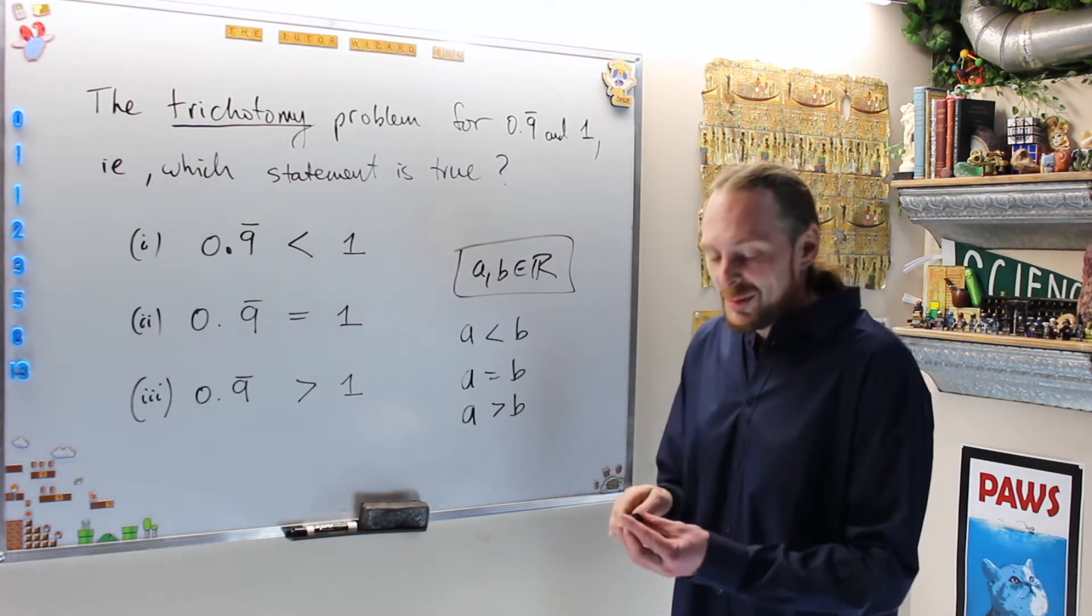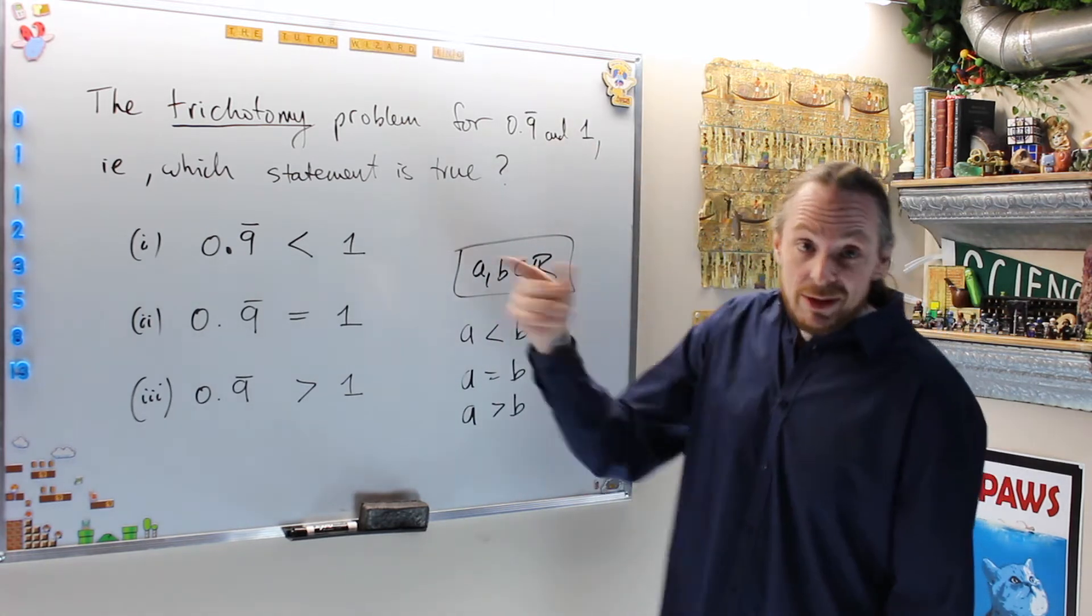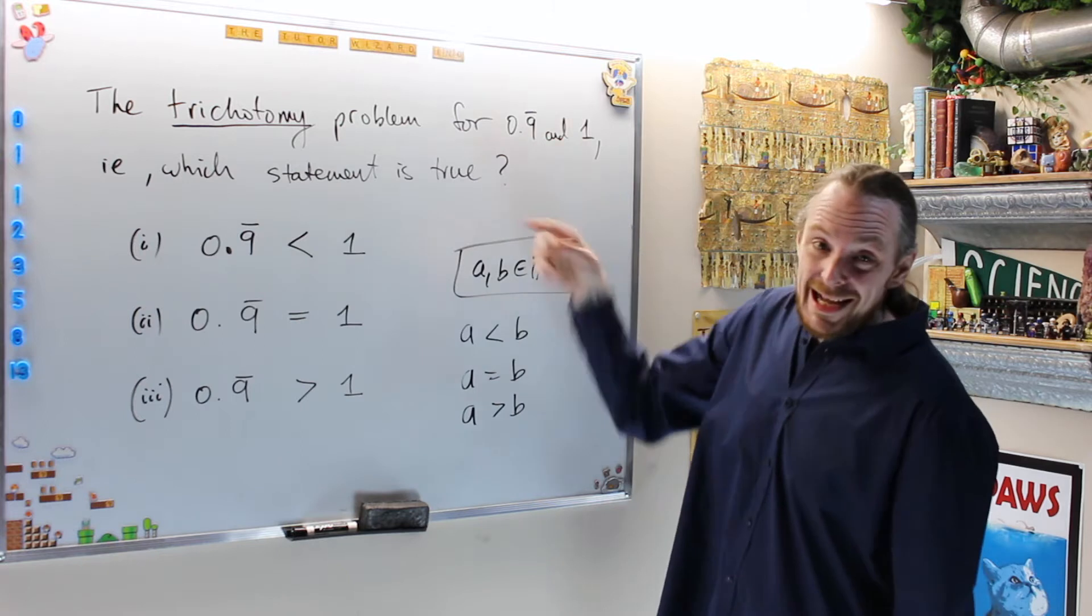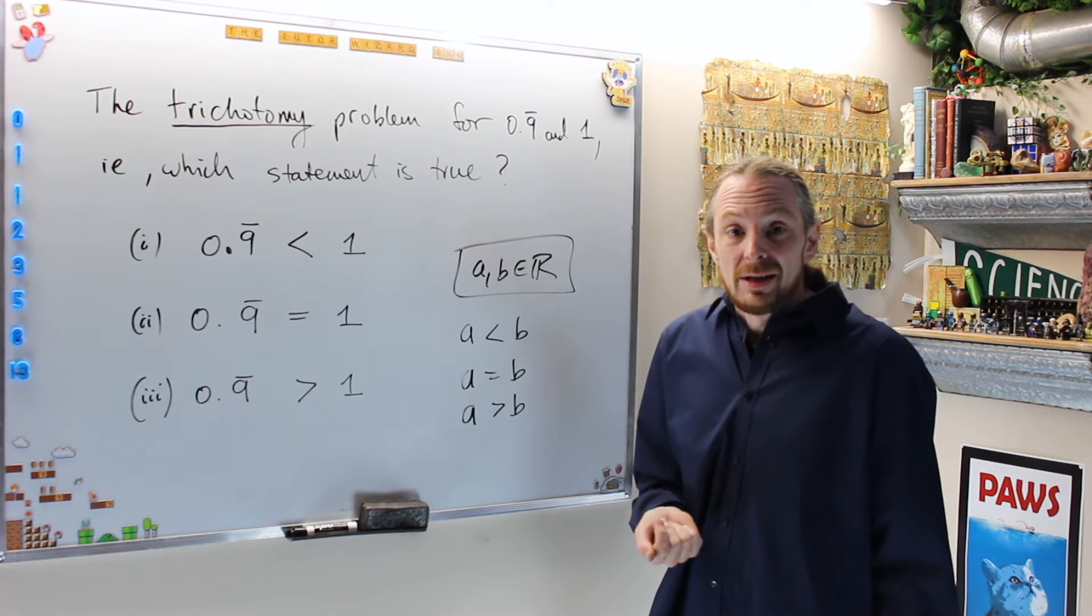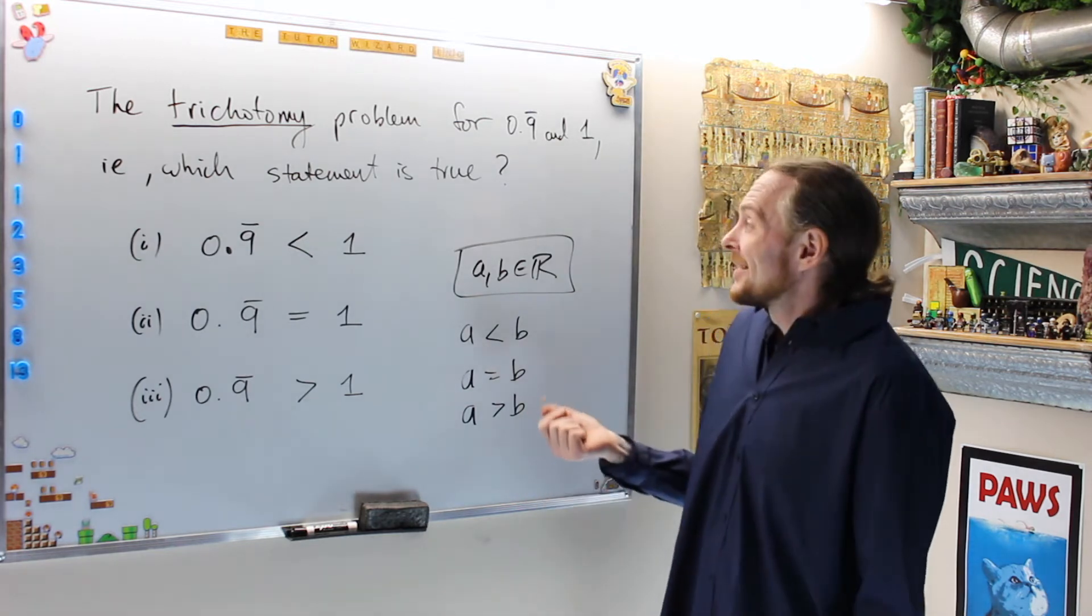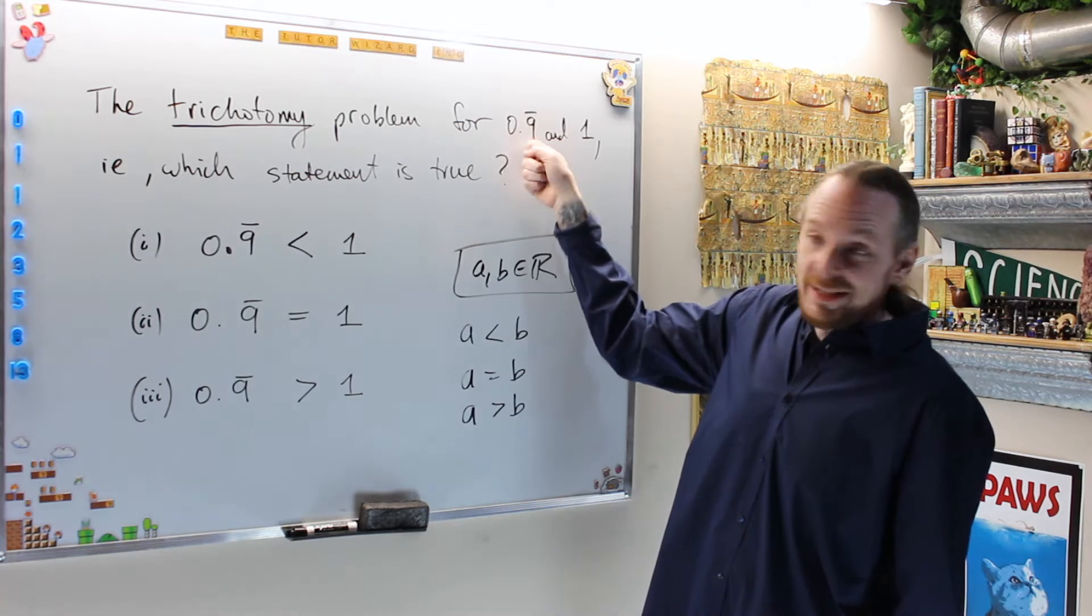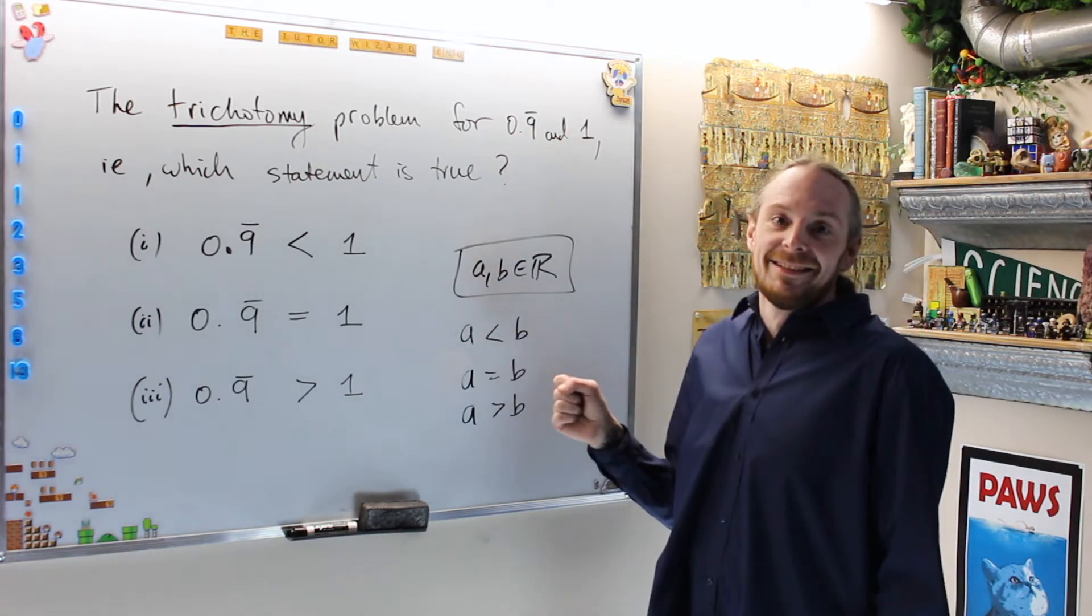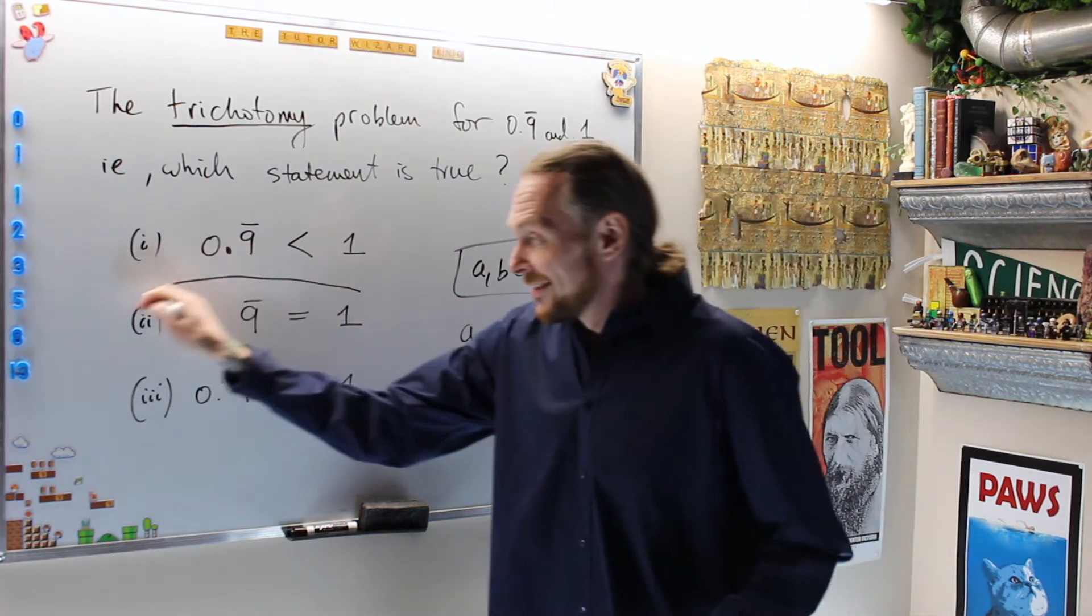Now we specifically have two numbers. Here's a number 1, which is a real number, and here's 0.9 with infinitely many nines repeating, which is supposedly a real number. Another way to ask this is: is 0.9 repeating an integer? Is it equal to 1? Turns out, here's the answer - option two is correct.